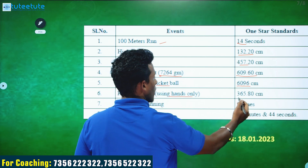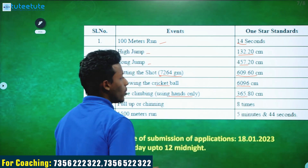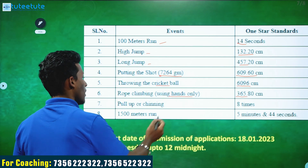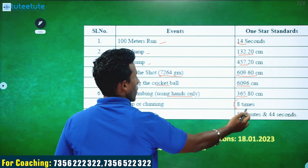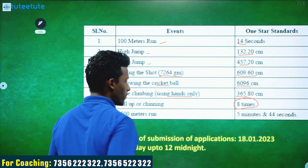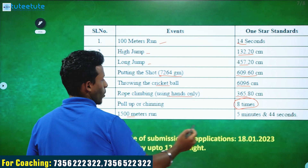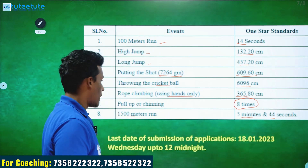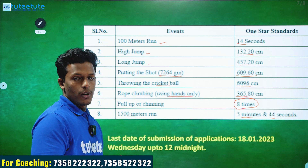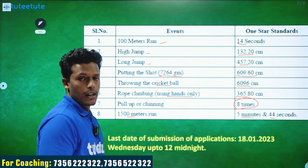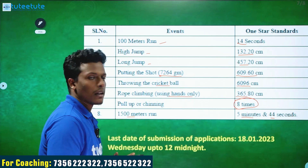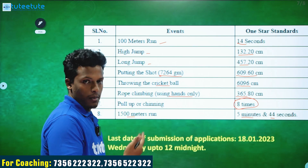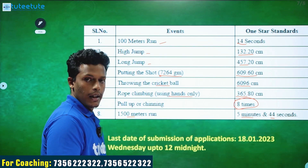High jump is 358.8 cm and long jump is 551.5 meters, to be covered in 5 minutes and 44 seconds. There are three events in the Police Constable physical test, and you must qualify for 5 events to proceed to the medical examination.